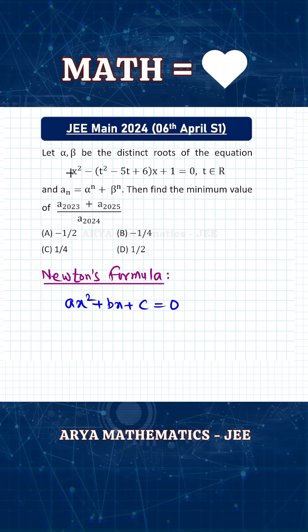Alpha and beta are the distinct roots of this quadratic equation, and as you can see, the coefficient of x is a function of t where t is any real number. a_n is alpha raised to n plus beta raised to n. Then we need the minimum value of this expression.